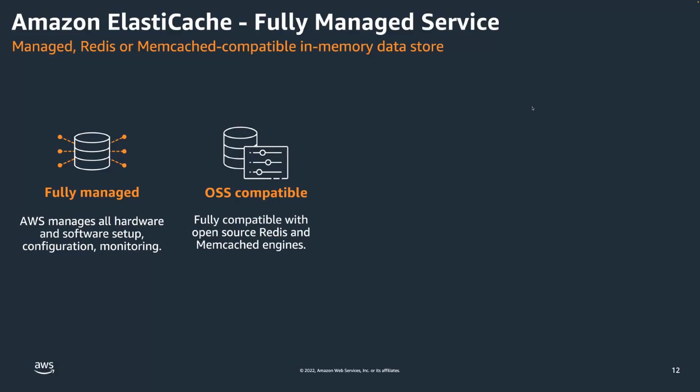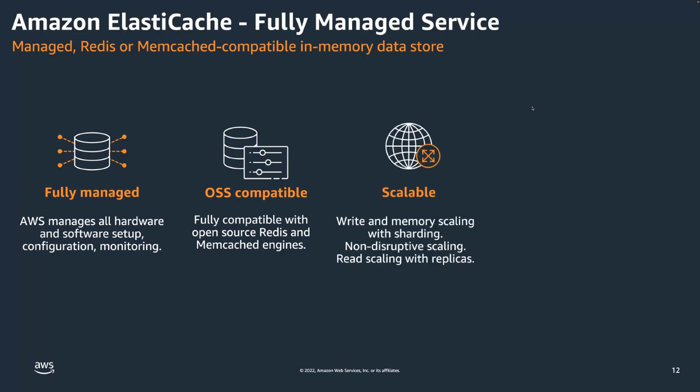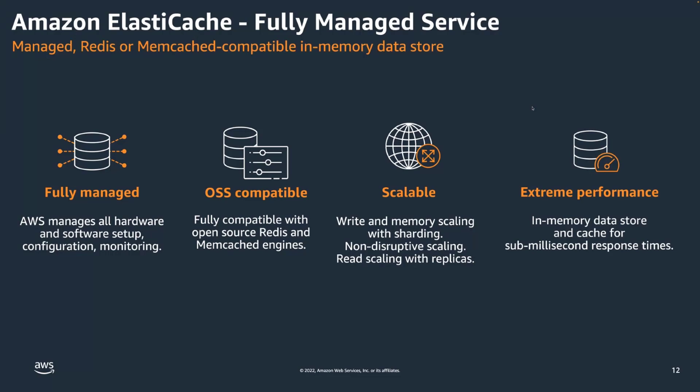ElastiCache is open source compatible with both Redis and Memcached engines, which means if you have an existing application running on either of those, you can typically migrate with little or no code changes. It's incredibly scalable — a single cluster can have up to 500 nodes, and with the largest node type, that gets you about 340 terabytes of in-memory data storage. We'll talk a little later about how you can get even more with data tiering.